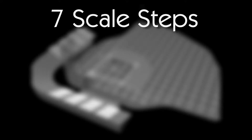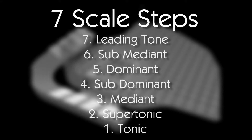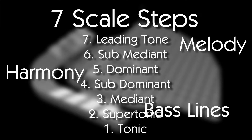There are seven scale steps in the major scale, and they are as follows: tonic, supertonic, mediant, subdominant, dominant, submediant, and leading tone. We use these scale steps to form melody, harmony, and bass lines, but we have to know how to use them correctly.